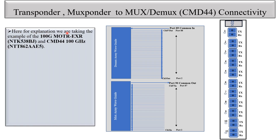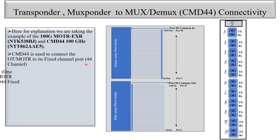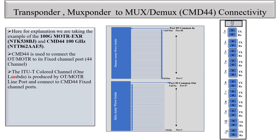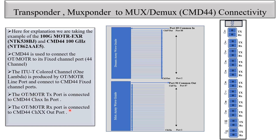For the explanation I have taken the 100G MOTR card. This is the 100G MOTR card and this is the CMD44 100 GHz. The CMD44 is used to connect the OT and MOTR — OT for the optical transponder — MOTR and MUXponder to fixed 44 channels. The ITU colored channel lambda is produced by the OT and MOTR line port and connected to CMD44 fixed channel ports. The OT and MOTR TX port is connected to the CMD44 channel input, and the OT and MOTR Rx port is connected to the CMD44 channel output. The TX port is connected to the input and the Rx port is connected to the input — Transponder and MUXponder have TX and Rx ports connected to CMD44 in and out ports.